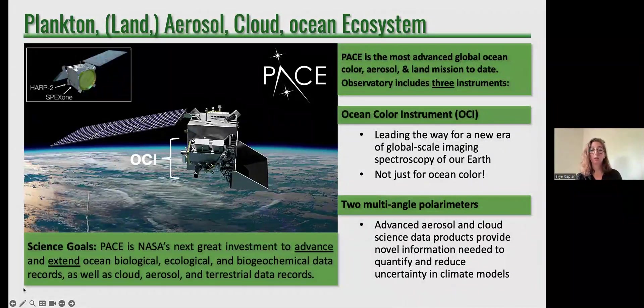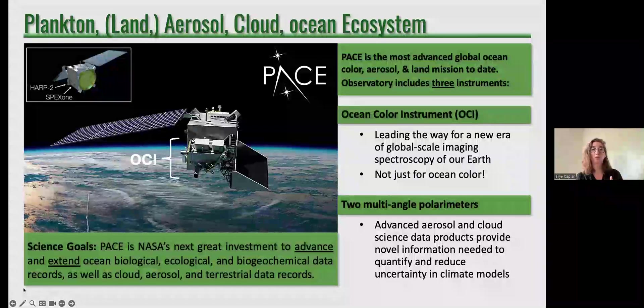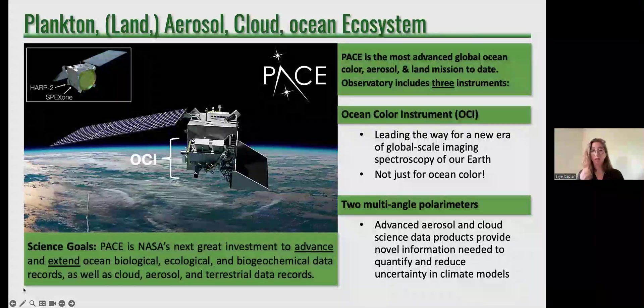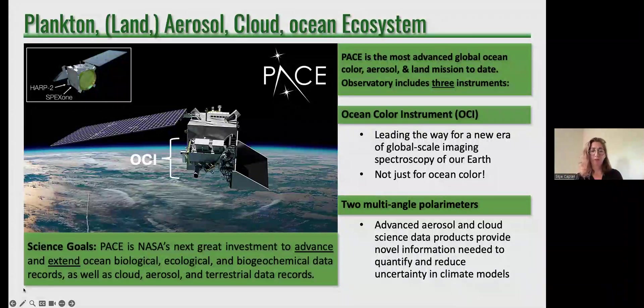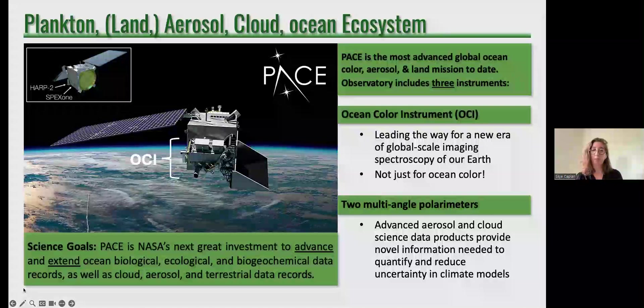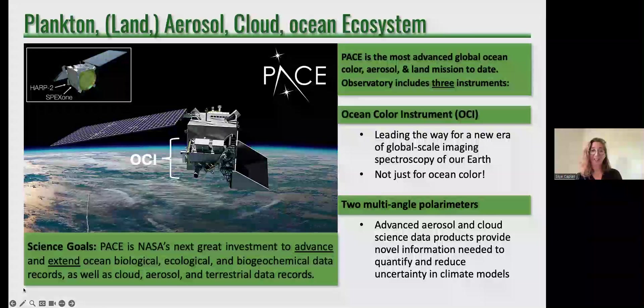OCI is the instrument I work with primarily. So I get land stuff from an Ocean Color Instrument. And that's also the one that I'll be focusing on for the rest of my slides. HARP2 and SPEXone are what are called polarimeters. So they're different types of instruments than OCI. And not only can they take pictures in a number of different wavelengths, but they can also look at different angles as well and different polarizations of light. And this allows folks to do some really cool 3D work like reconstructing clouds. OCI is an instrument that can take pictures in about 290 different colors.